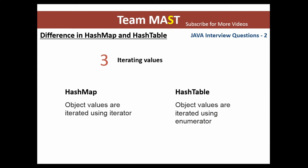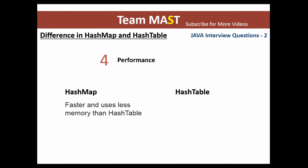The next difference is how you iterate in a HashMap versus a Hashtable. If you need to iterate in a HashMap, you use an Iterator. However, if you're using a Hashtable, you use an Enumerator to iterate over it. You can also check out other videos on HashMap and Hashtable — like the collections video — to understand how these work in depth.